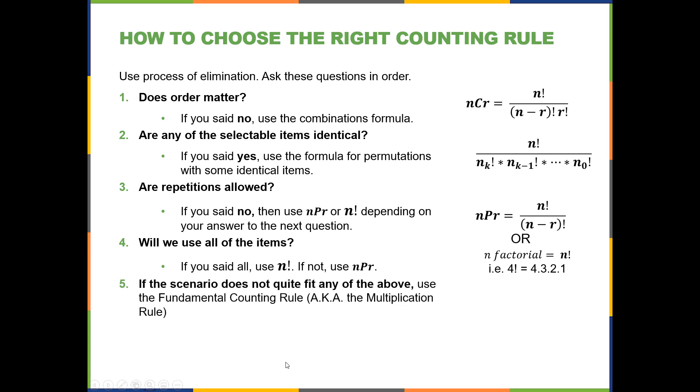Five, if the scenario does not quite fit any of the above, use the fundamental counting rule, aka the multiplication rule. And so that just is where you figure out how many spaces you need to fill and how many items you might be able to put in each. And then you multiply those together to see how many possible outcomes you have.